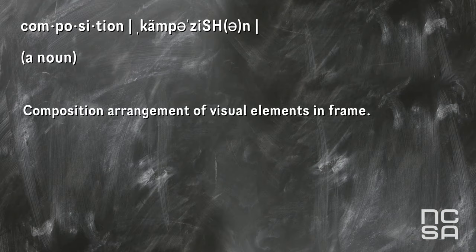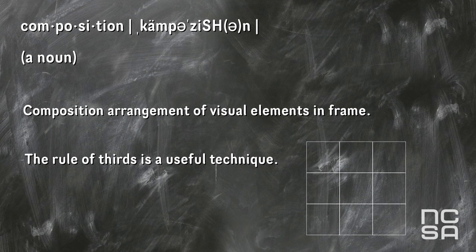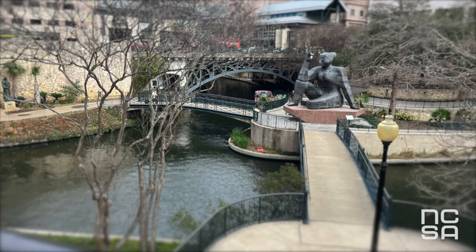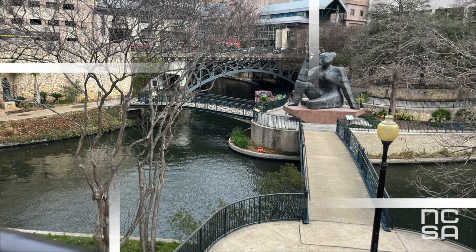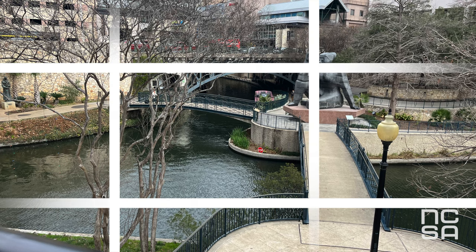Composition refers to the arrangement of visual elements in the frame. One useful technique is the rule of thirds. Imagine two vertical lines and two horizontal lines intersecting along the image — this may be a little difficult to visualize. Using the blue jay bird watching example: if you place a subject center frame without directing attention toward the focal point, it could be potentially boring and flat. Whereas if you place your subject in the right third of the photo, for instance, it creates an interesting image, as seen in the example.